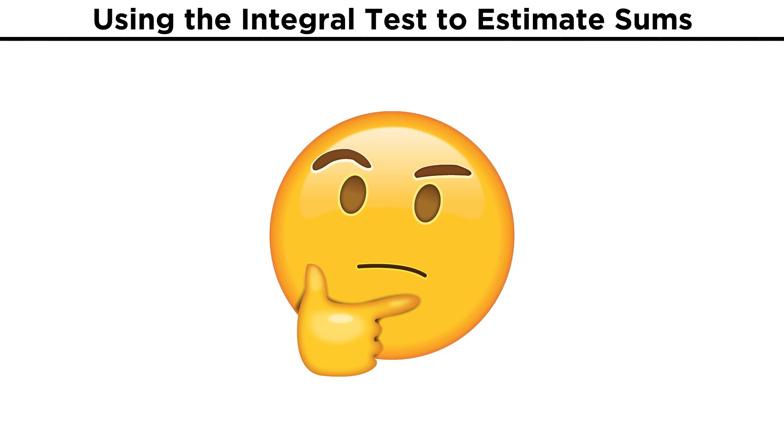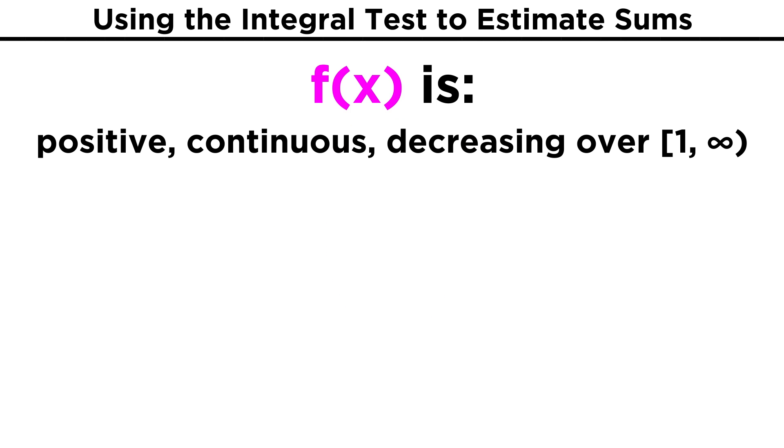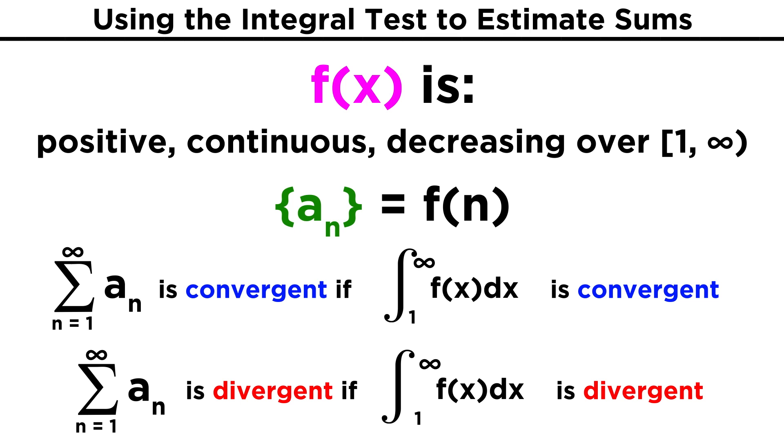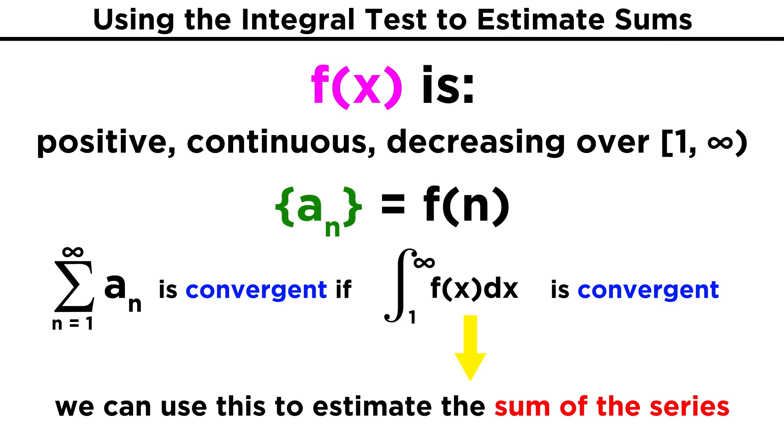How can we summarize this technique in a general way? We can say that if we have some function f that is positive, continuous, and decreasing from one to infinity, and we also have a sequence that is derived from this function, in other words, a sub n equals f of n, then the series that can be formed from this sequence, from one to infinity, will be convergent only if the corresponding improper integral is convergent. If the integral is divergent, the series will be divergent. If the series is indeed convergent, then we can also estimate its sum by calculating the improper integral in some way that is similar to the example we just performed. And that is the essence of the integral test.